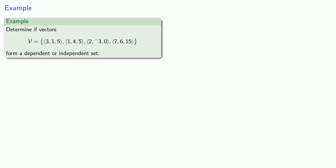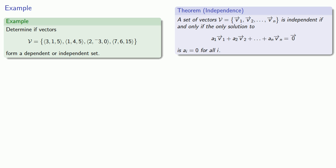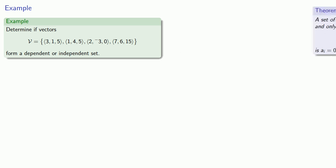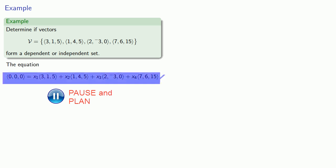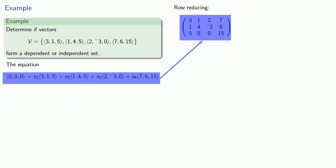Suppose we want to determine whether a set of vectors form a dependent or independent set. Remember, we can determine this by seeing what linear combinations give us the zero vector. We'll set down the equation linear combination equal to zero, create the coefficient matrix, and row reduce it.